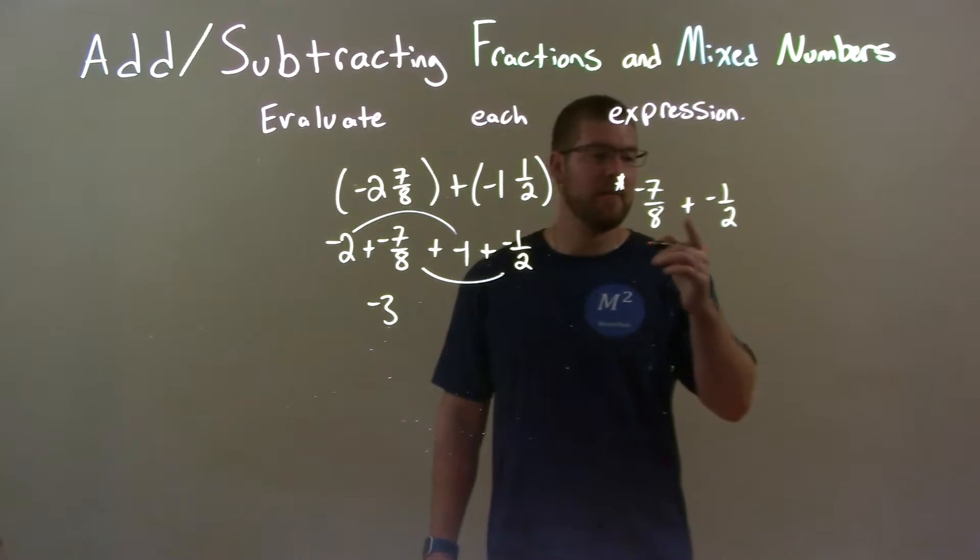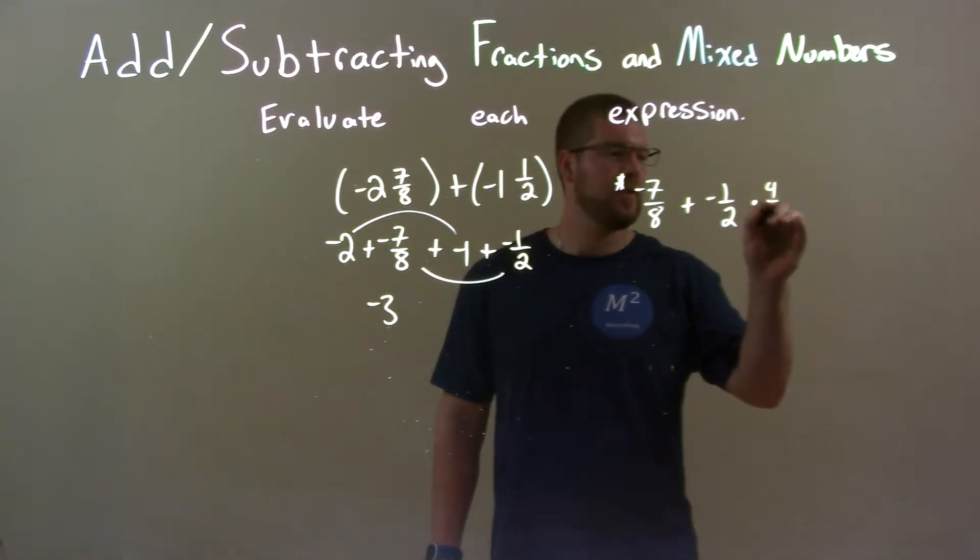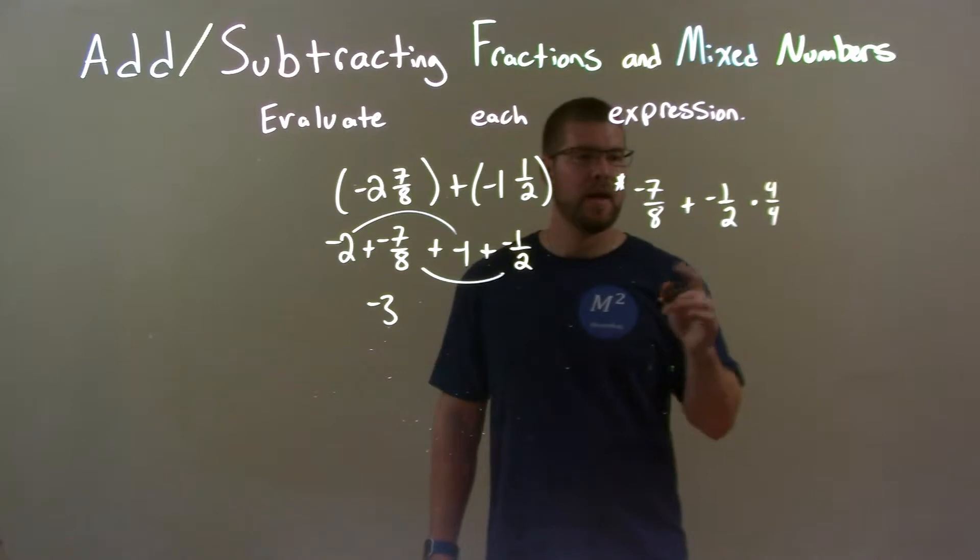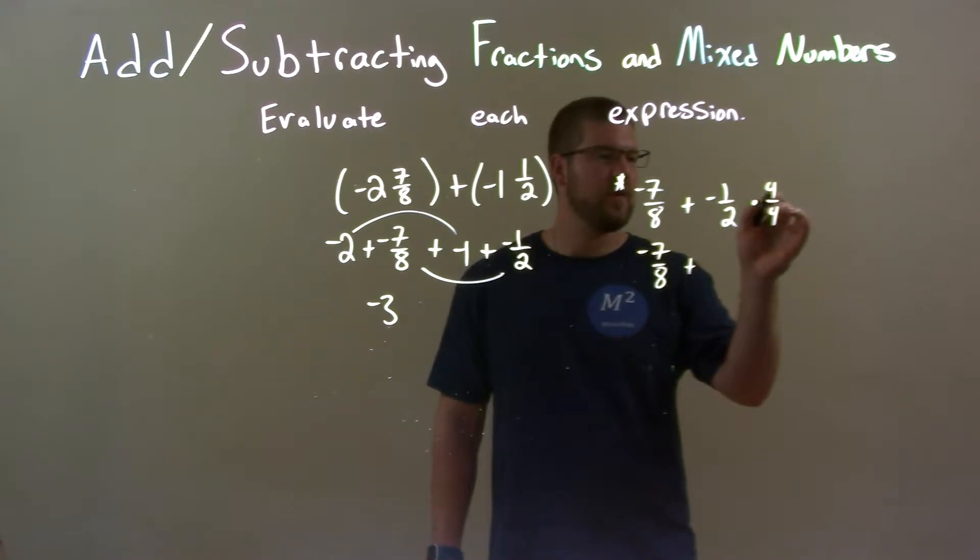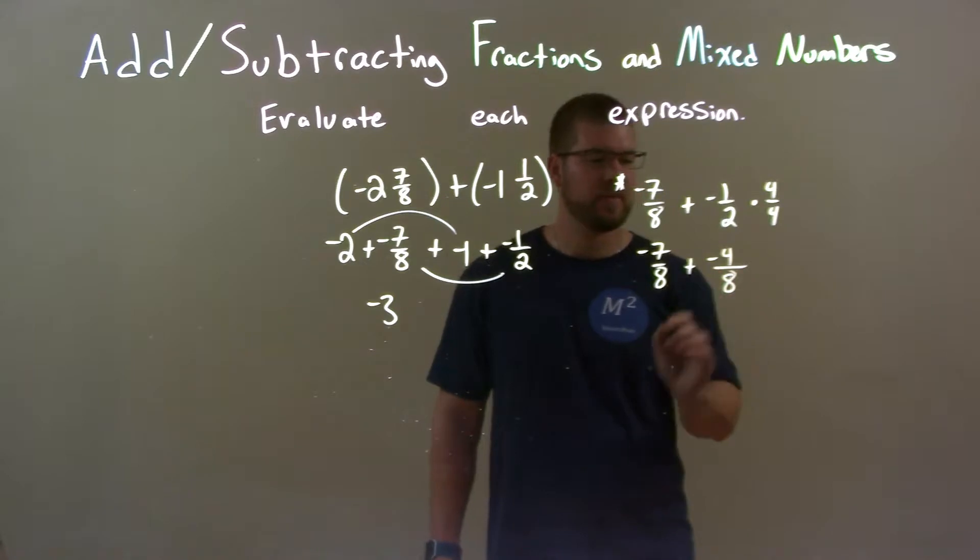Well, 2 can get to 8 by being multiplied by 4. So, I have 4 over 4 right there. Now, when I multiply this out, negative 7 eighths comes down here and plus negative 1 times 4 is a negative 4 and 2 times 4 is 8.